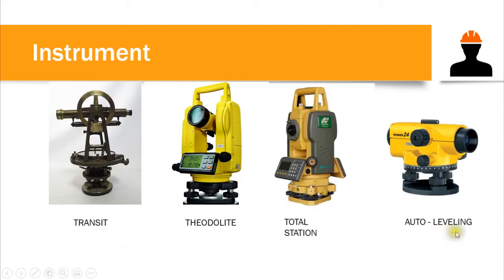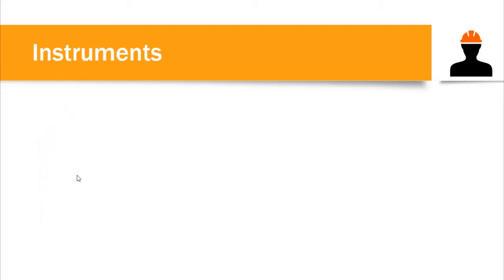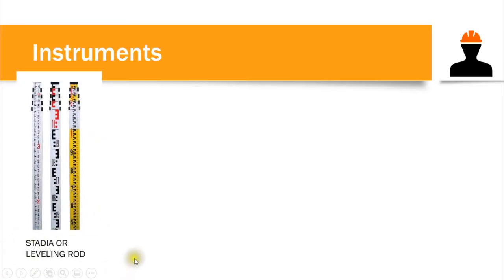We also have the auto level. The difference is that in the auto level the telescope cannot be tilted — it is fixed. Once you level the entire instrument, the telescope is automatically leveled as well. Unlike the transit through total station, where you still need to level the telescope manually using the bubble features on the instrument.